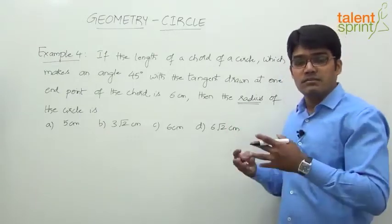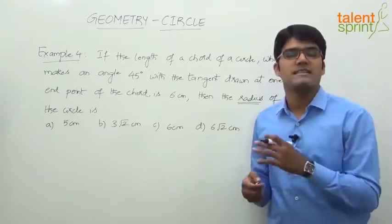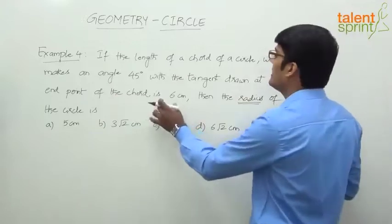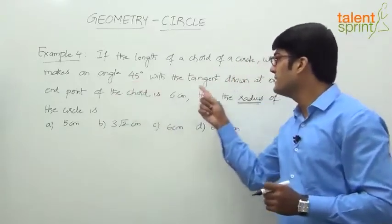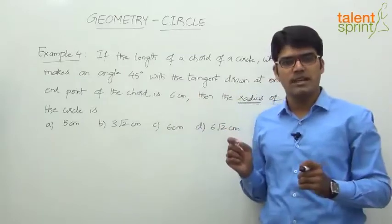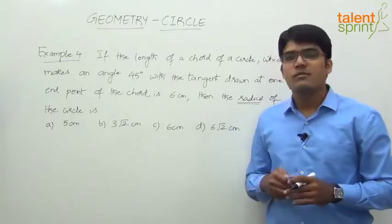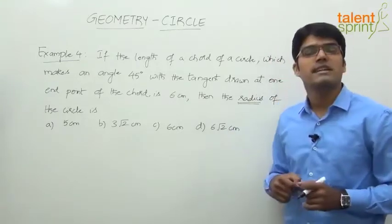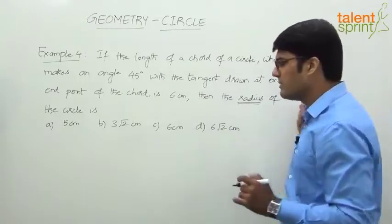This is a different question — not similar to what we have done in examples 1, 2, and 3. The length of the chord is 6 centimeters, and this chord makes an angle of 45 degrees with a tangent drawn at one end point of the chord. Based on that, we have to find out the radius of the circle. So let us try and construct the figure properly.